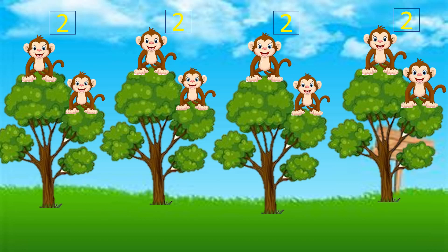Guys, do you remember in first grade you studied skip counting? Skip counting by two. Now let me use skip counting to find the total number of monkeys: two, four, six, eight. So how many monkeys are there? There are eight monkeys in all. The total number of monkeys is eight.